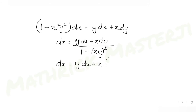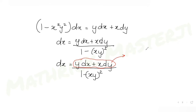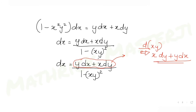Now I can see that the numerator y dx + x dy is nothing but the derivative of x·y(x). Applying the product rule, the derivative of x·y gives x·dy + y·dx. So I can write dx = d(xy) / (1 - (xy)²).